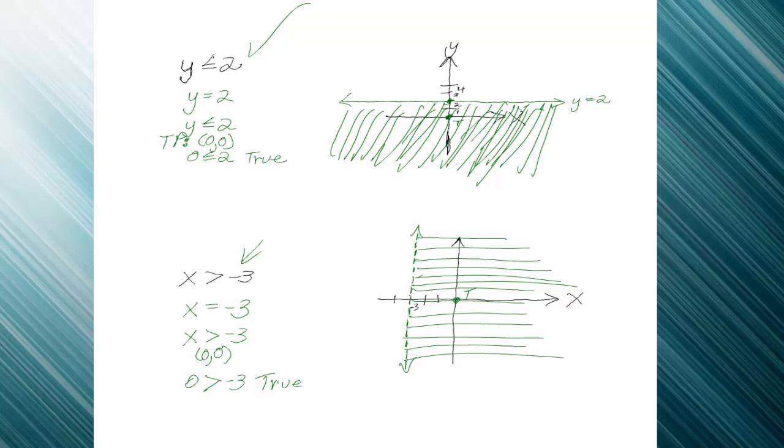Okay, and I have just graphed the linear inequality in two variables with one of the variables invisible—we'll call it invisible. This is the graph of the inequality x is strictly greater than negative 3. Talk to you later.